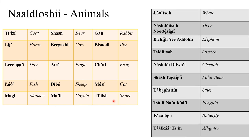Here are some more animals that aren't really common around the reservation. As you can imagine, a penguin isn't running around the desert. I found these words online and they seem to work, so go ahead and practice them as well.